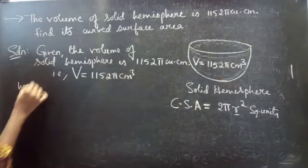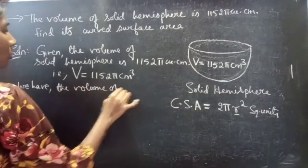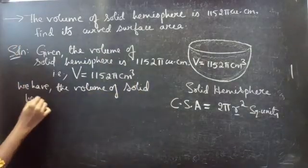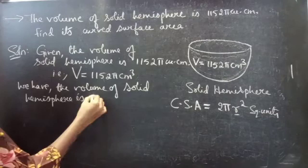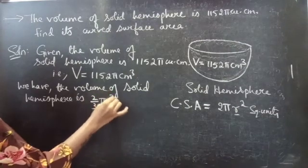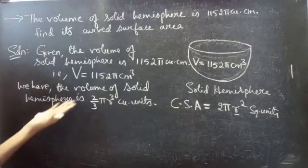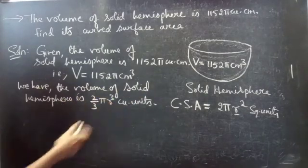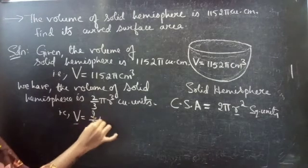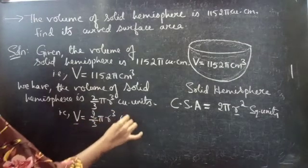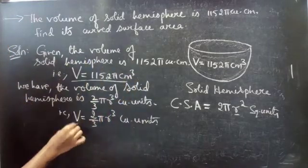Solution: given the volume of a solid hemisphere is 1152π cubic centimeter. We have the volume of a solid hemisphere equals 1152π cm³. From the formula, the volume of a solid hemisphere V equals (2/3)πr³ cubic units.